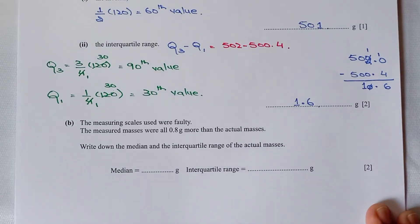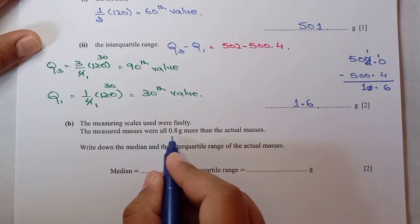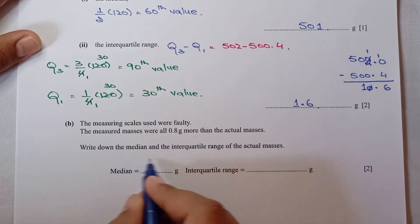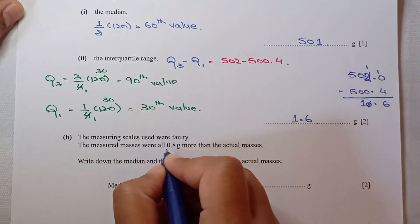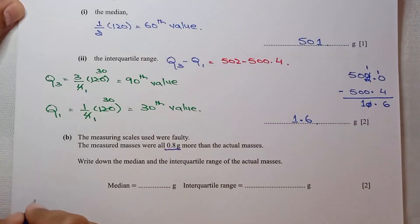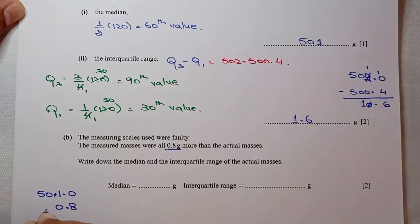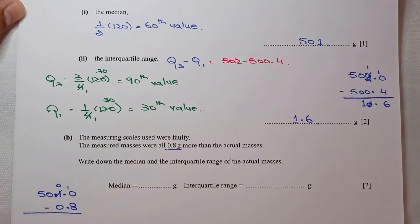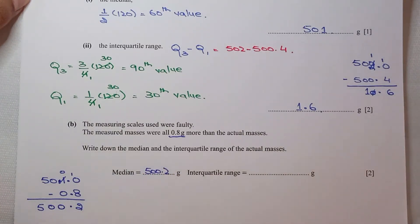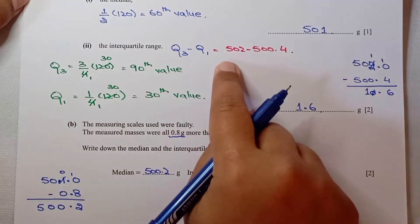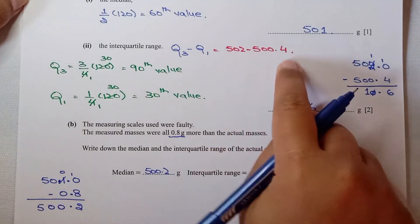For part B, the measuring scales were faulty — measured masses were all 0.8 grams more than actual masses. The actual median is 501 minus 0.8 equals 500.2 grams. The interquartile range stays the same at 1.6 grams, because subtracting the same quantity from both quartiles does not change their difference.